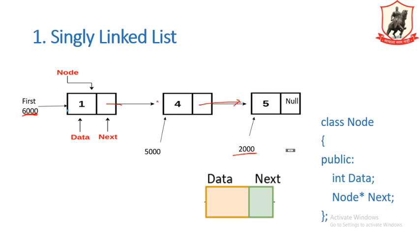It is called a singly linked list because the pointer maintained points only to the successor, and it is a one-directional pointer. We can traverse the list only in the forward direction or a single direction. Also, if you observe the node, only one link is maintained, which is the forward link. That is why it is called a singly linked list.